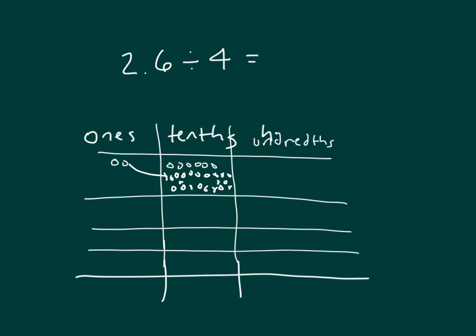And then so I have 26 divided by 4. That's 6 within each, with the remainder of 2 still. That remainder of 2 gets regrouped into the hundredths place. So that I have 20 there.